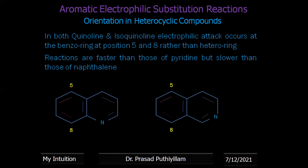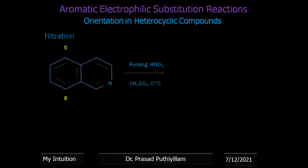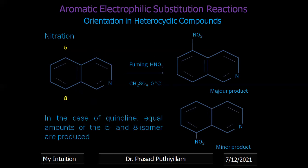Nitration example: with fuming nitric acid and dimethyl sulfate at 0°C, isoquinoline gives 5-nitroisoquinoline as the major product and 8-nitroisoquinoline as the minor product. With quinoline, you get almost a 50:50 ratio of position 5 and position 8 substituted isomers.